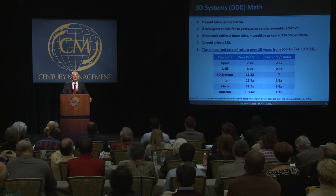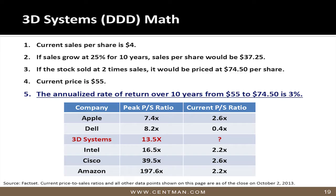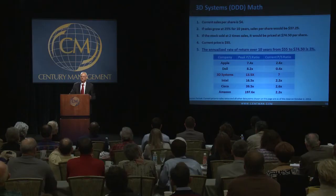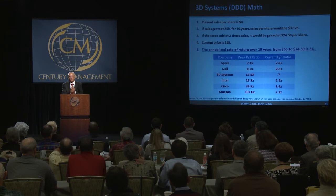Every technology company, when it starts, sells at high multiples of sales — and then they come down. Apple sold at one time at 7.4 times sales; it's now at 2.6. Dell sold at 8 times sales; it's at 0.4. Intel sold at 16 times sales; it's at 2.2. Cisco sold at 39 times sales; it's at 2.6. Amazon sold at 197 times sales; it sells at 2.2. The point is: whenever these companies mature, no matter what the multiples are at the top, they're going to go down to about 2 times sales.